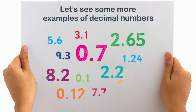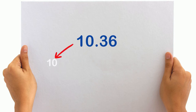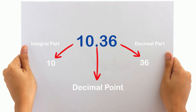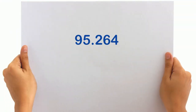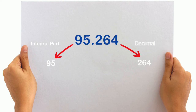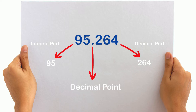Let's see some more examples of decimal numbers. In the number 10.36, 10 is the whole integral part and 36 is the decimal part. The point between these parts is the decimal point and there are two decimal places in it. In the number 95.264, 95 is the whole integral part and 264 is the decimal part. The point between these parts is the decimal point and there are three decimal places in it — that is 2, 6, and 4.